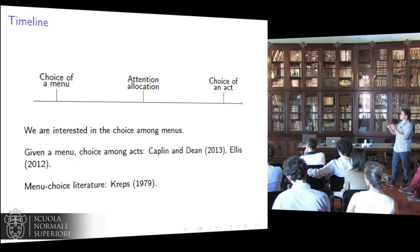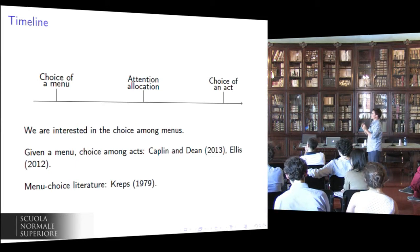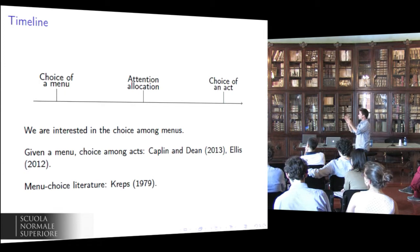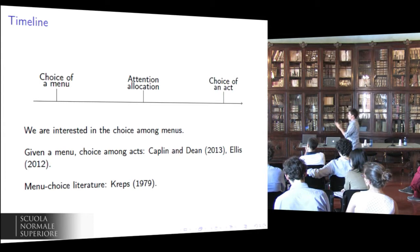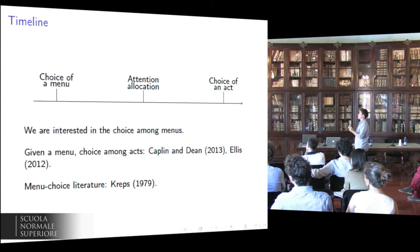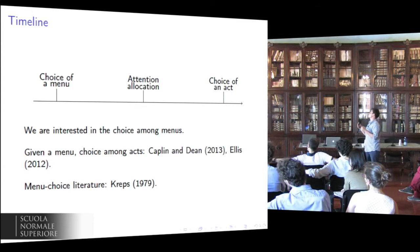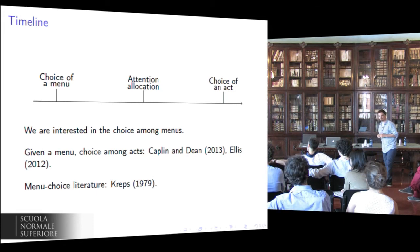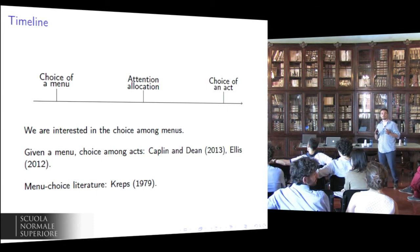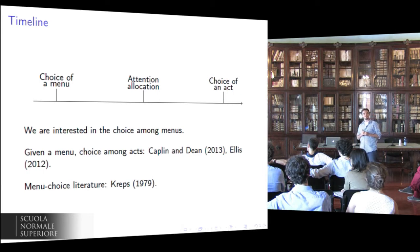To clarify, let's see graphically the order of events. First, we have the choice of a menu. Then, we have the allocation of attention. And finally, from the selected menu, an act is chosen, contingent on the new information acquired about the state of the world, acquired by allocating attention. Is this choice problem clear enough?